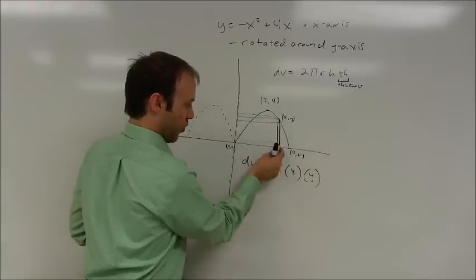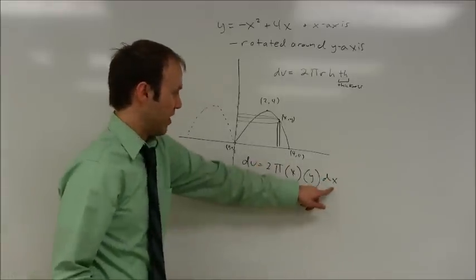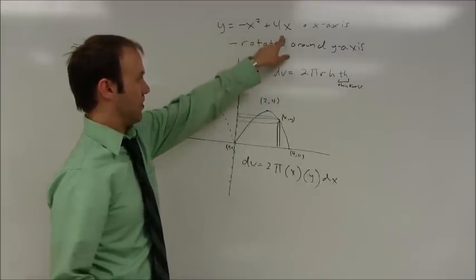The thickness, the width, in the x direction, so that's a dx, tells me that everything needs to be written in terms of x. So, I know that y is equal to negative x squared plus 4x.